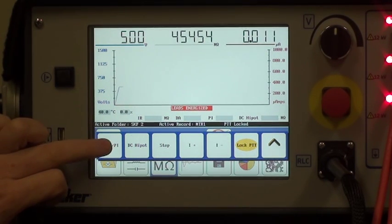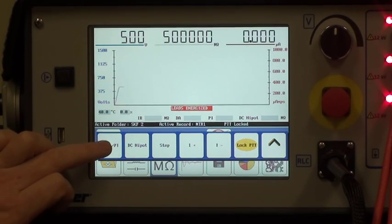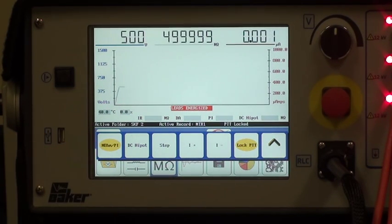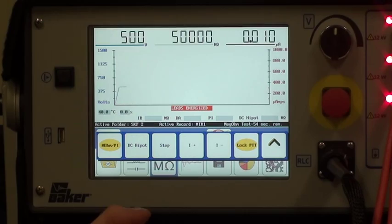What I'm now going to do is activate the megaohm stroke PI polarisation index button. What this does is it starts a countdown. This countdown is a standard IEEE test for a megaohm for 60 seconds.